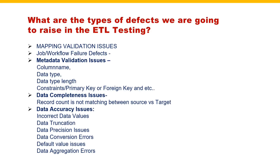For example, you can mention: this column is not available in the target system. Or this particular column data type - as per mapping document it has VARCHAR2, but it is available in the target system as number. Or in the mapping document the data type length is provided as 10, but it is defined as 30. For constraint validation, for example, employee ID should have a primary key in the table, but they have not enabled the primary key in the target table. You have to raise defects for column name, data type, data type length, and constraints.